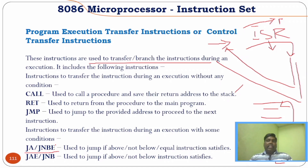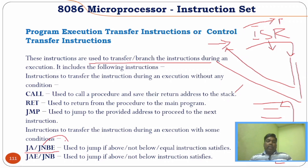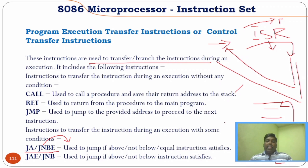The first jump instruction is JA or JNBE — Jump Above or Jump Not Below or Equal, which have the same meaning. It compares the operands: if the first operand is greater than the second operand, that is 'above', and it will jump to the given address. It is used to jump if above or not below.